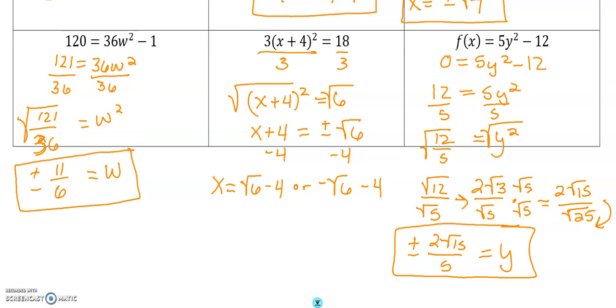We'll get x + 4 equals plus or minus the square root of 6. Then we subtract 4 on both sides. Then we'll just end up with x equals the square root of 6 minus 4 or negative square root of 6 minus 4. You could plug it in and get the decimal or you could leave it like that. It'll depend on what the directions ask you for. They might ask you to round it to the nearest hundredth.